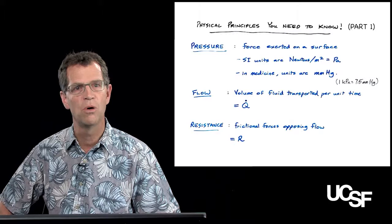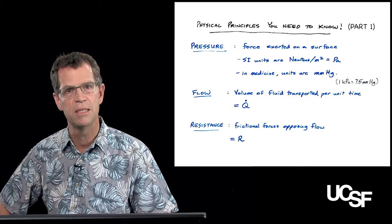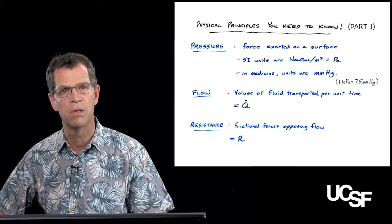Let's start with understanding pressure, flow, and resistance. Pressure is simply a force exerted on a surface. In metric units, that means newtons per square meter or pascals. In medicine, they use the term millimeters of mercury — the amount of pressure that a column of mercury one millimeter high exerts on the surface below it.